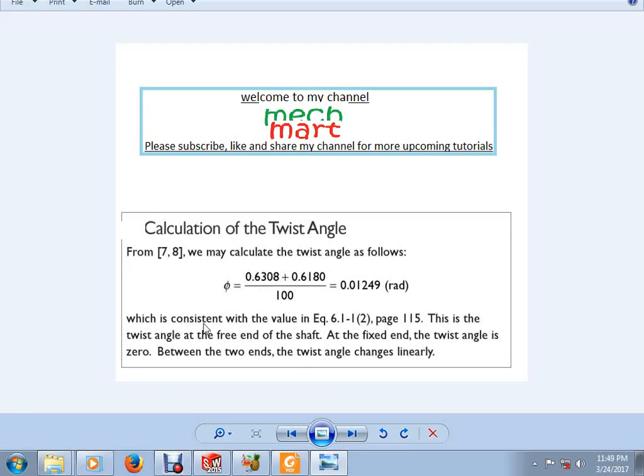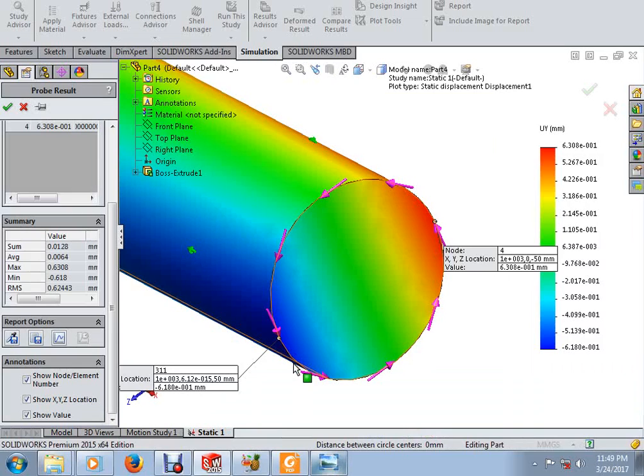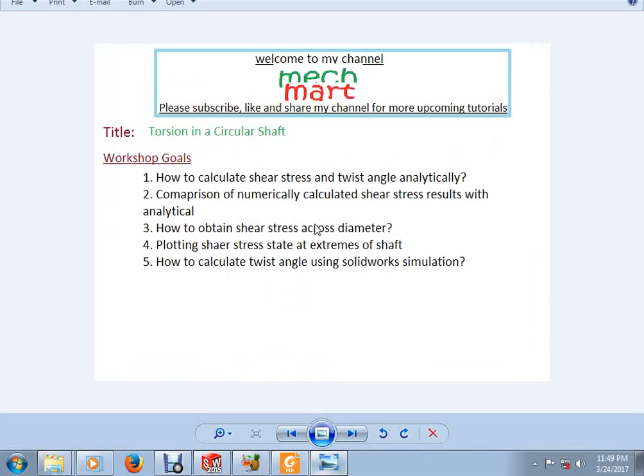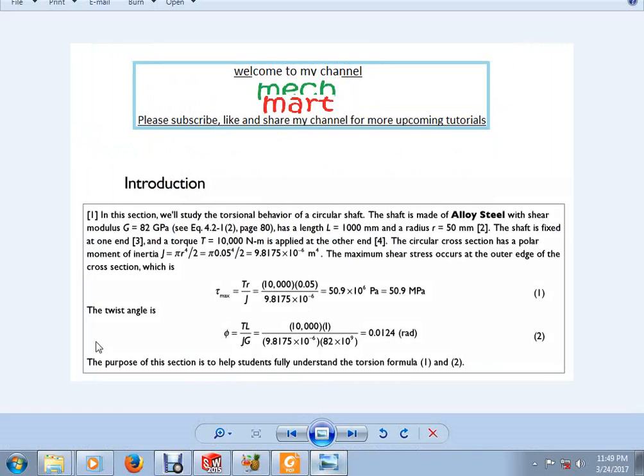That is in radian, which is consistent with the value that we have calculated in the start. We should remember, this is the twist angle that we have calculated analytically.